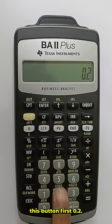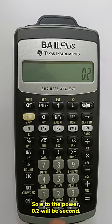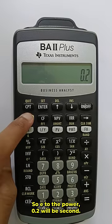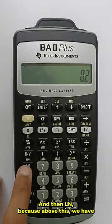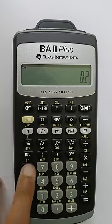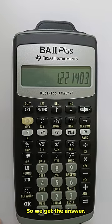First 0.2, so e to the power 0.2 will be second and then ln, because above this we have e to the power x written. So we get the answer.